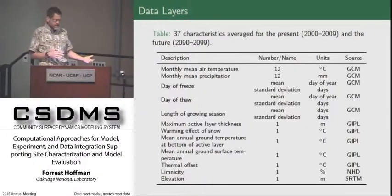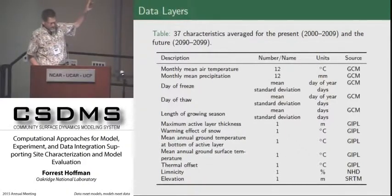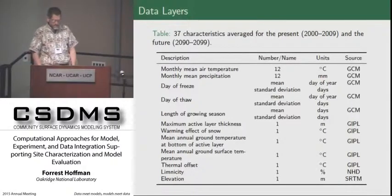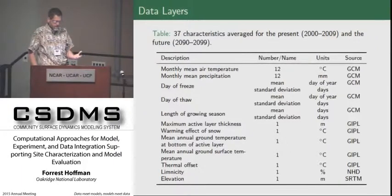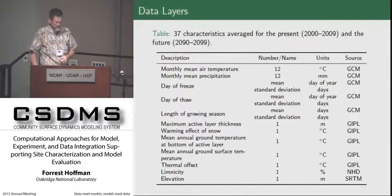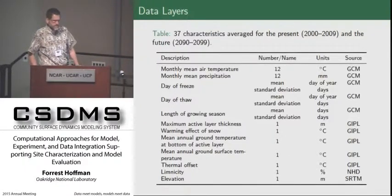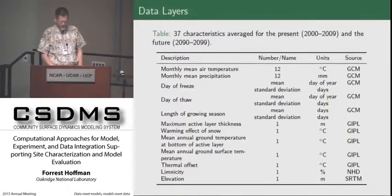In order to look at past, present, and the potential future, we wanted to use model data. We used monthly mean air temperature and mean precipitation from downscaled GCM climate model results, day of freeze and thaw, and length of the growing season. Our colleagues at the University of Alaska that are part of the NGEE Arctic project have a permafrost model that they've run offline underneath these same climate characteristics, giving us information about maximum active layer thickness, the warming or insulating effect of snow, ground temperature information, thermal offset, and a lemnicity — sort of a pondiness of the area — and elevation data.